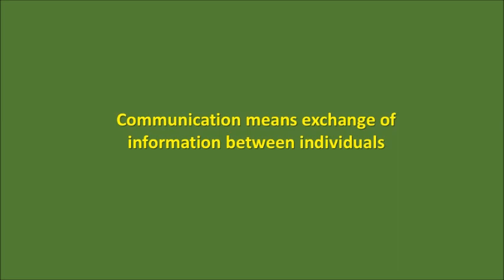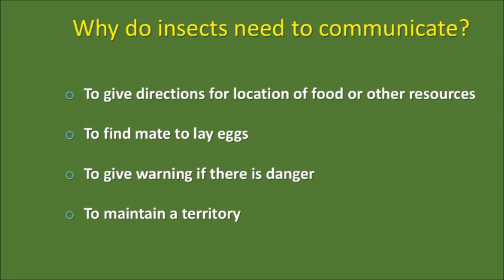So the fun question is: how do insects communicate among themselves? First and foremost, why do insects need to communicate? Insects need to share information about where they found food — that is one very important thing. For example, an ant found food somewhere; it has to come back and tell its friends where to go to bring the food home.